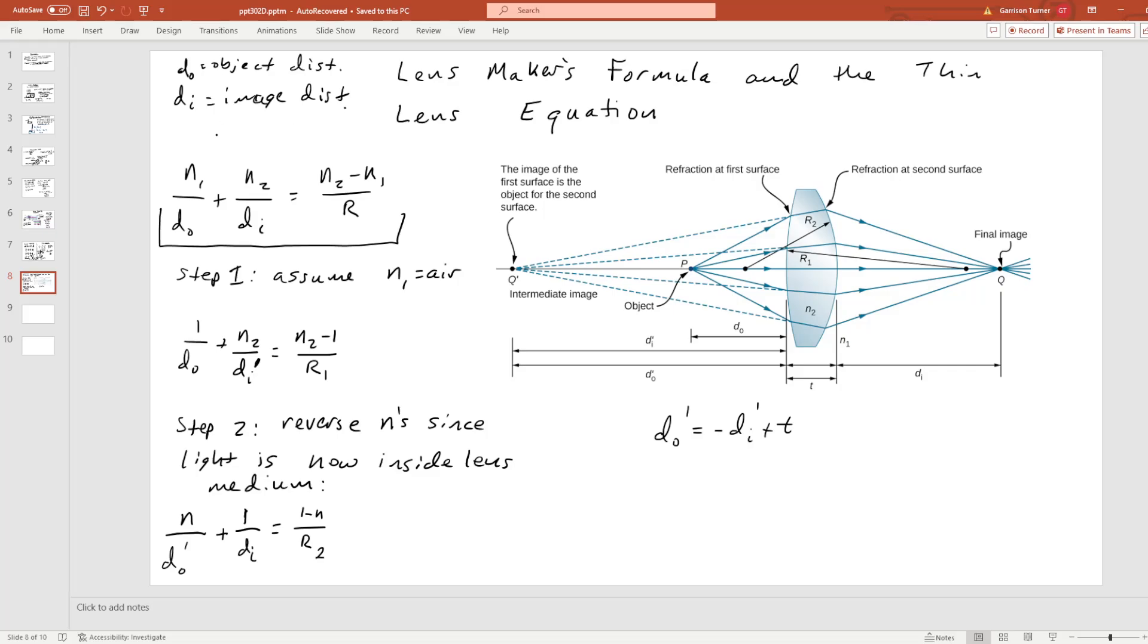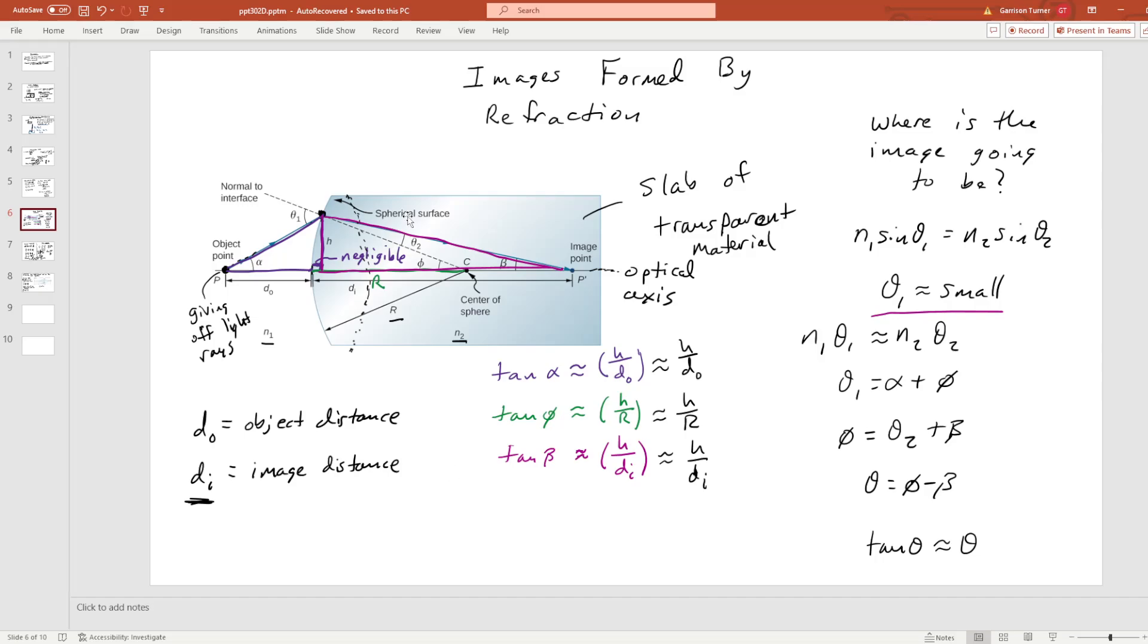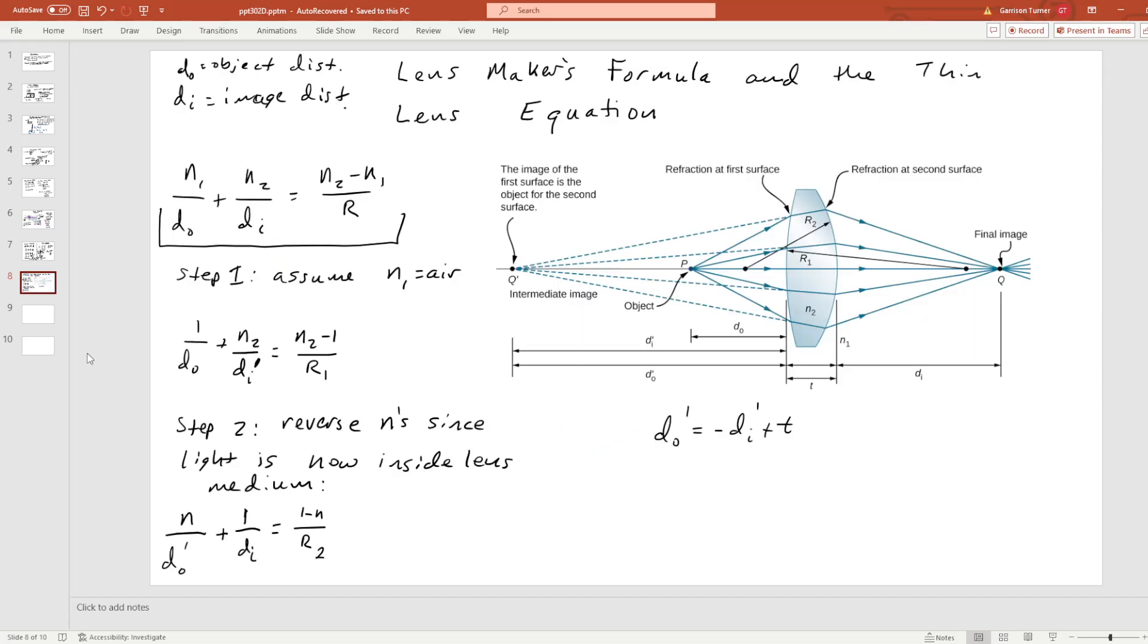But with lenses, if we go back to the previous picture, here we just had a slab of transparent material. One of the sides was curved, but it didn't necessarily have to form an image somewhere outside of the lens. But for typical lenses, things like magnifying glasses and things like that, your image is going to appear outside of your material. And that's what you want. That's why magnifying glasses work.